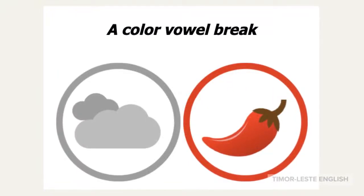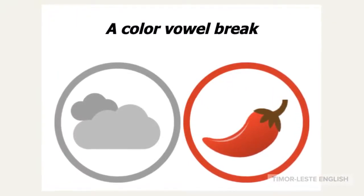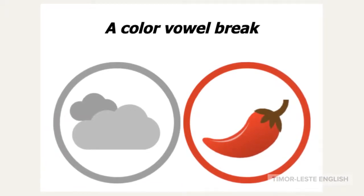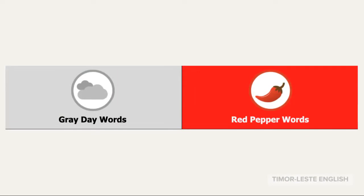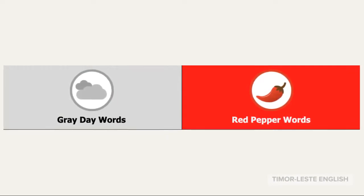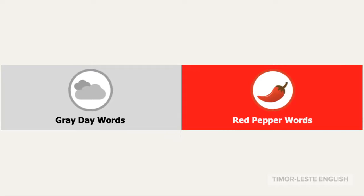A color vowel break. This is a color vowel assessment near the end of Unit 1. You are assessing how well students can understand and hear the difference between two color vowel sounds: gray day A and red pepper E.